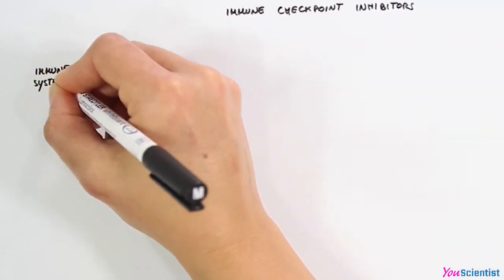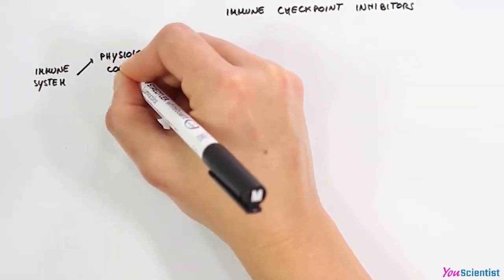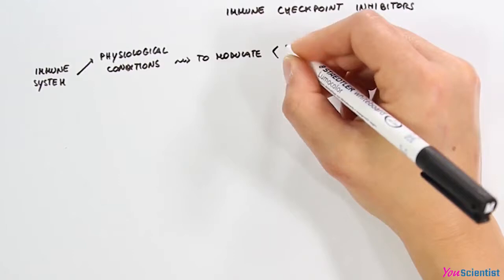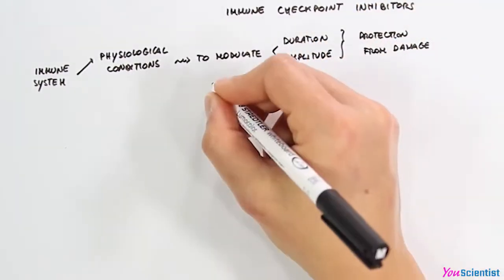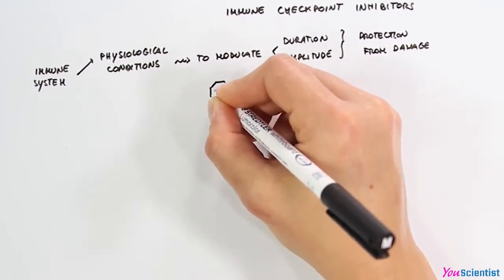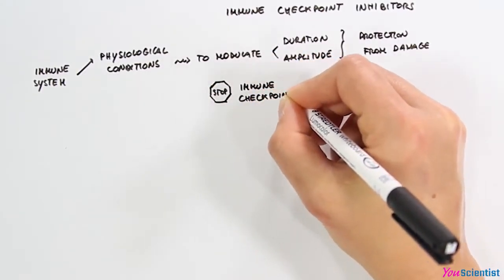The immune system under physiological conditions modulates the duration and amplitude of its response, protecting the organism from collateral tissue damage. This modulation is mediated by special stop signals called immune checkpoints.